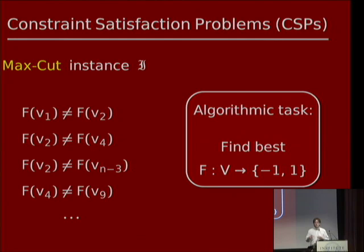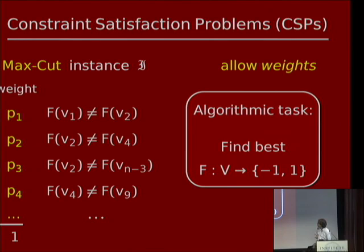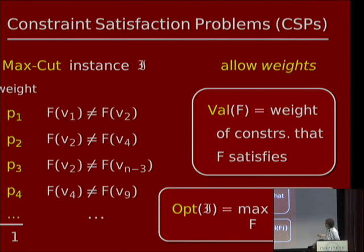We also allow weights in the input, so instead of caring about each constraint equally, there are weights p_1, p_2, p_3, and so on, which add up to 1 without loss of generality. The value of an assignment f is the total weight of constraints it satisfies. We write opt(I) for the maximum possible value achieved by any assignment f on instance I. Both of these numbers are between 0 and 1 by virtue of the weights summing to 1.